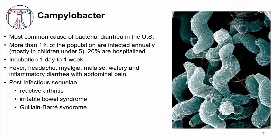Clinically, you really can't distinguish between the bacteria that cause bloody diarrhea. However, one distinguishing characteristic of Campylobacter is a higher incidence of post-infectious sequelae. Some of these sequelae include reactive arthritis — swelling and pain of a joint — irritable bowel syndrome with abdominal pain, bloating, and discomfort, and most severely, Guillain-Barré syndrome. These problems occur after Campylobacter infection.